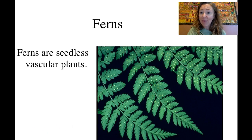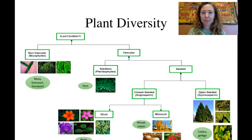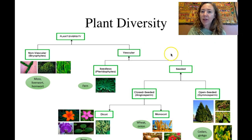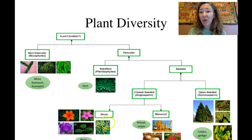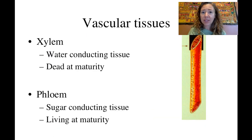Ferns have vascular tissue, but they still reproduce by spores, so they're a seedless vascular plant. We're starting to see how we divide plants based on anatomy and physiology — their parts and their functions. Understanding those functions, like what vascular tissue does, can tell us a lot about where plants are able to grow and how we can best grow them. And that's kind of the focus of our week.